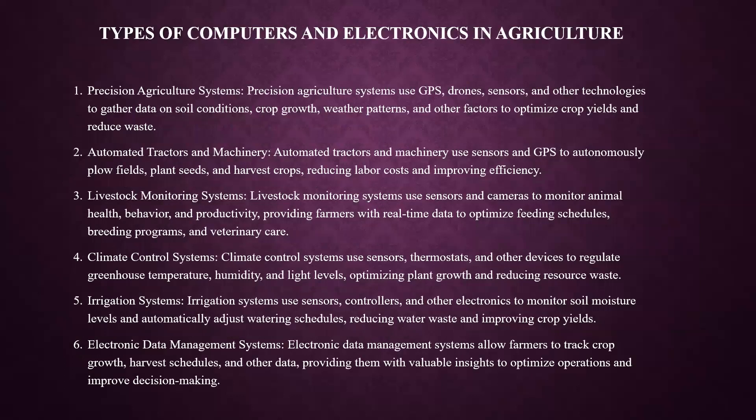Types of computers and electronics in agriculture include precision agriculture and automated tractors as already discussed. Livestock monitoring systems use sensors and cameras to monitor animal health, behavior and productivity, providing real-time data to optimize feeding schedules, breeding programs and veterinary care. Climate control uses sensors, thermostats and other devices to regulate greenhouse temperature, humidity and light levels. Irrigation systems use sensors and controllers to monitor soil moisture and automatically adjust watering schedules. Electronic data management systems allow farmers to track crops, harvest schedules and other data, providing valuable insights to optimize operations and improve decision making.